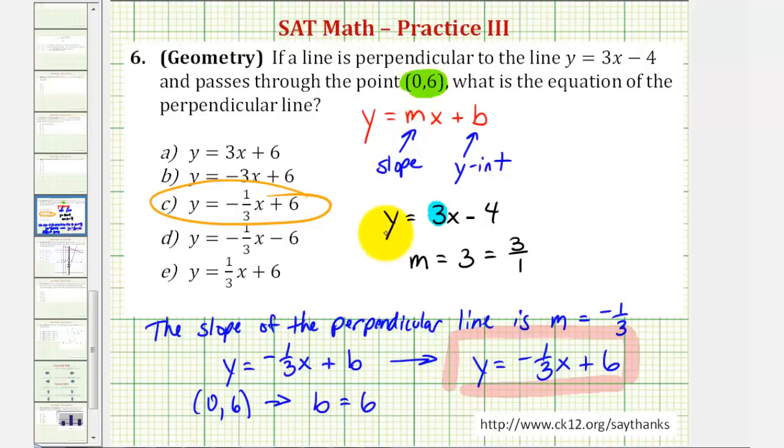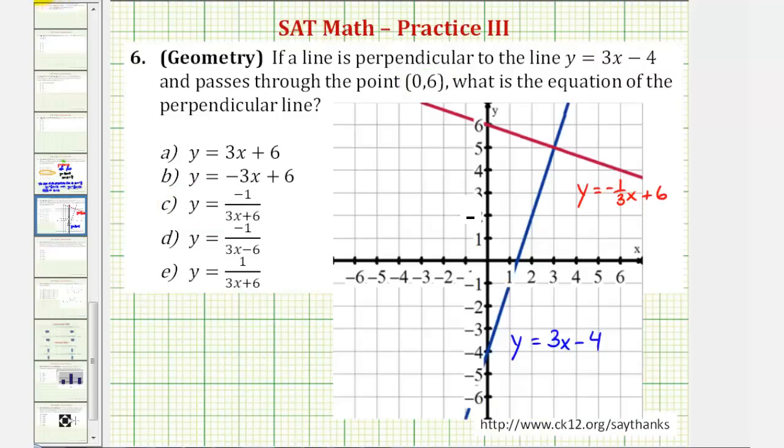Now before we go, let's actually verify that the given linear equation and the equation that we found would produce perpendicular lines. The graph of the given linear equation would produce the blue line, where notice how the y-intercept is negative 4 and the slope is 3 or 3 over 1. Notice if we pick this point on the blue line and we go up 3 and right 1, we do find another point on the line.